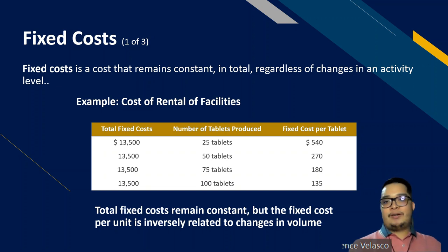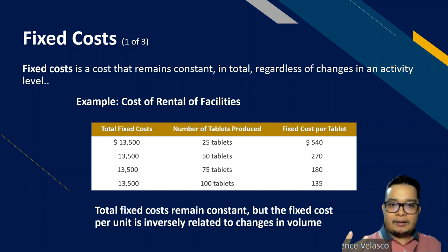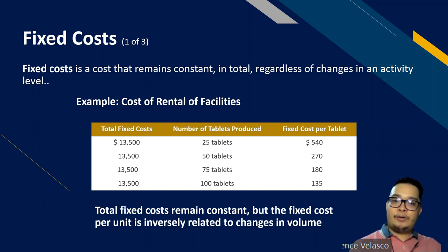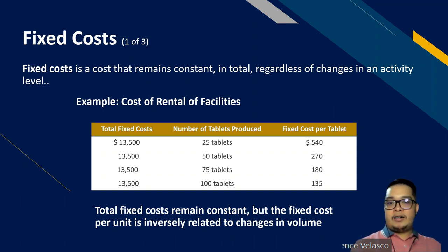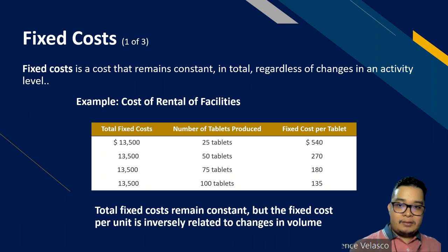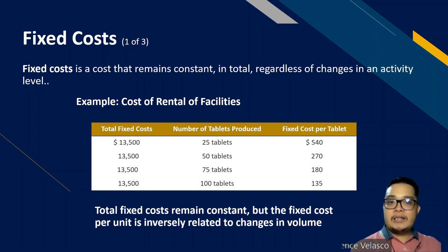Let's look at fixed costs. Fixed cost is a cost that remains constant in total regardless of changes in activity level. For example, using the same tablet company: if it has a manufacturing facility in Pampanga and rents a warehouse, the rental cost is $13,500. As you can see, regardless of the activity level, the total fixed costs remain the same, so we conclude that this is a fixed cost.